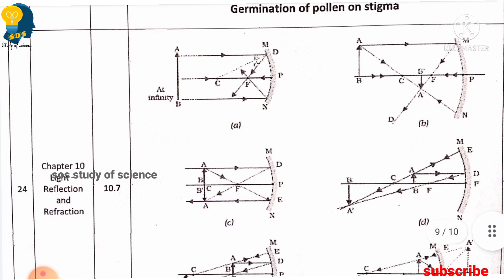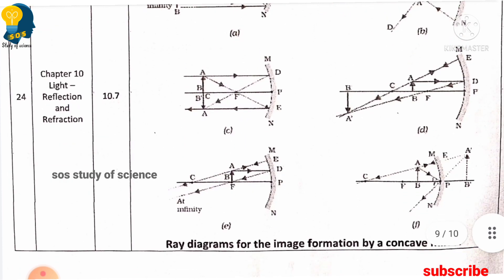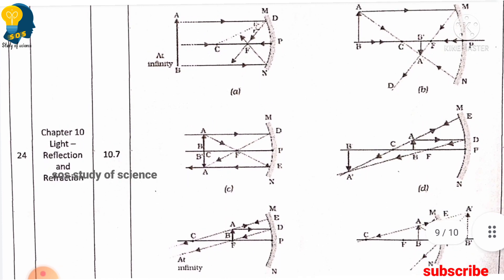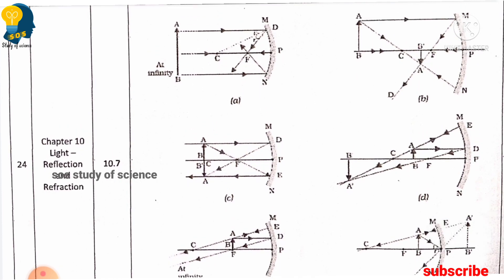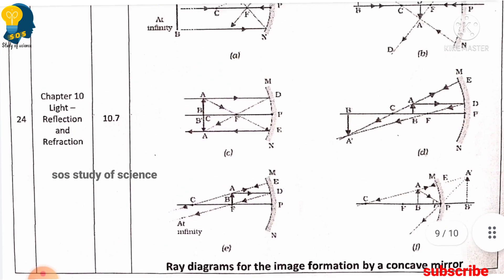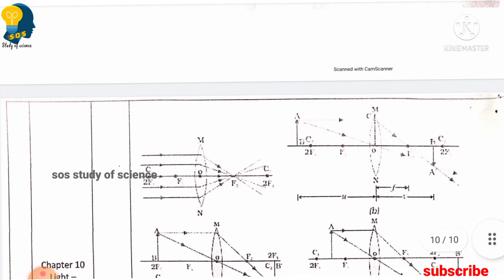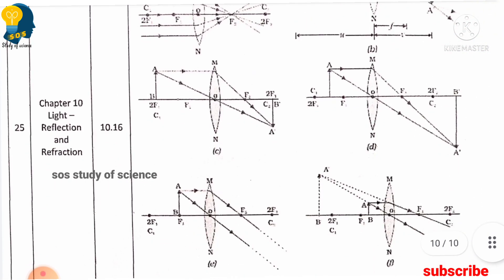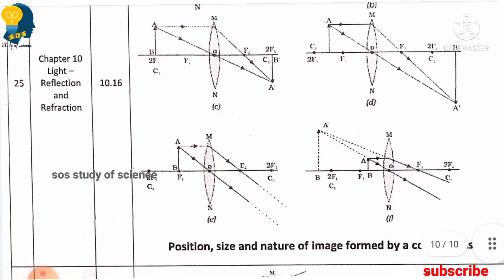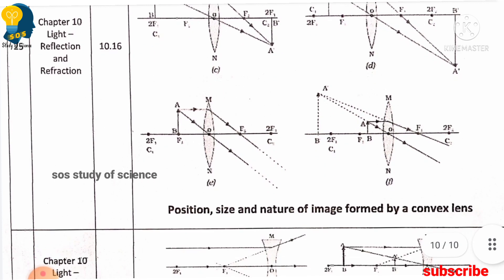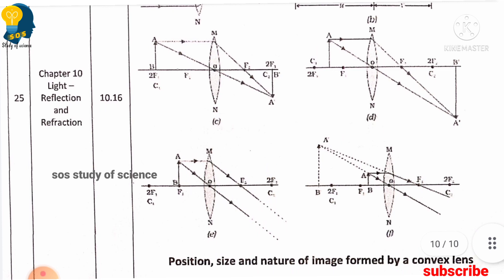Now moving to physics, you must learn all the ray diagrams for image formation by a concave mirror. This is from the lesson light — reflection and refraction. You must also learn the diagrams based on position, size, and nature of image formed by a convex lens. These are all very important diagrams.